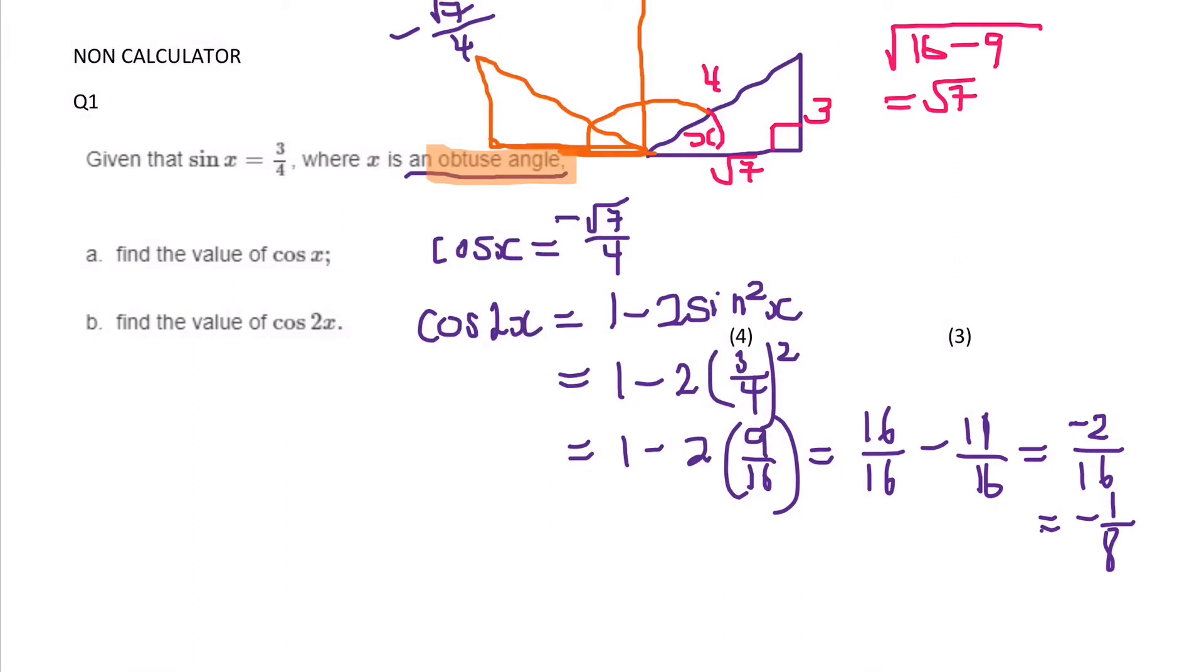And you can see that it tells us given sine x is equal to 3 over 4. So I drew my triangle in purple. Then I used Pythagoras here to find the missing side of the right angled triangle. Then remembering my cast diagram or the unit circle.